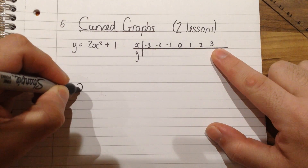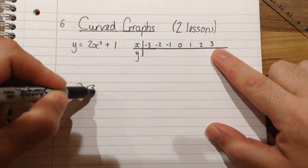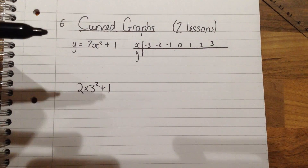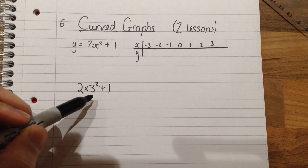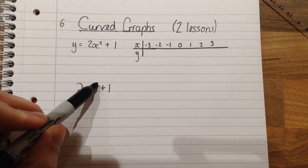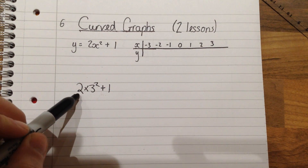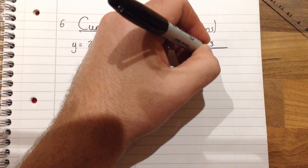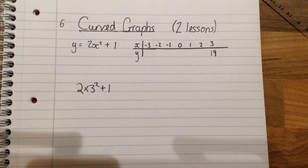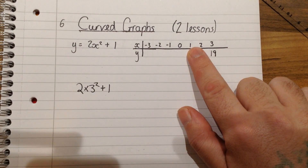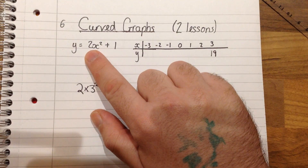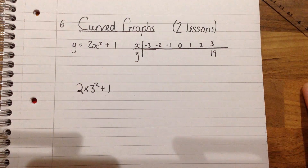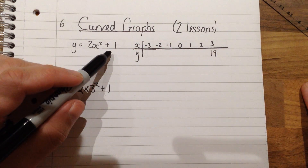So just remember that this would mean 2 times 3 squared plus 1. At this point the most important thing that we need to remember is that we do the squared first. So we've got 3 squared is 9, times by 2 is 18, plus 1 is 19. So for the 3, I'd put the number 19 there. For 2, we do the same thing. If x is 2, we would have 2 squared, which is 4, times that by 2, which would give me 8, and then add on the 1, so 9.